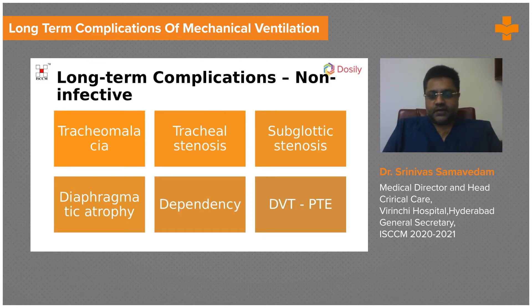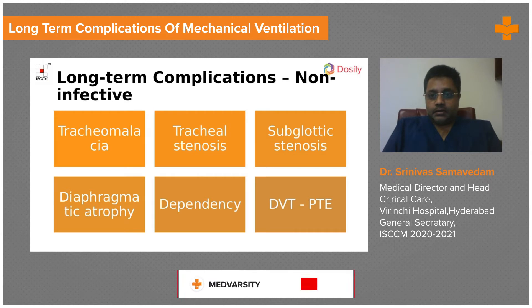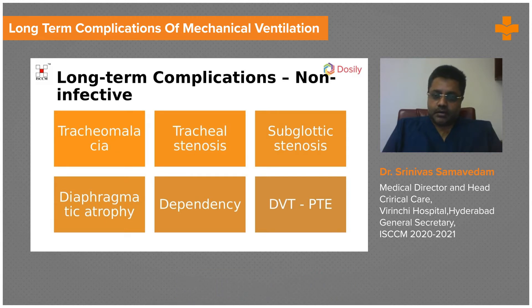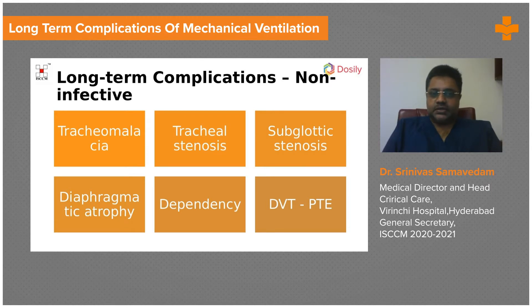Tracheal stenosis is catastrophic — you extubate the patient, the patient can't breathe, and then you try to reintubate but can't. The patient is struggling, and this is a disastrous complication. Similarly, subglottic stenosis can occur because of an inappropriately sized tube or inadequately monitored cuff pressures. Both tracheal stenosis and subglottic stenosis are disastrous consequences for the patient.